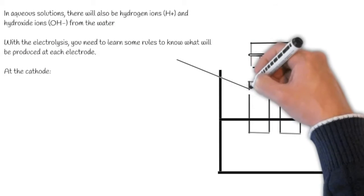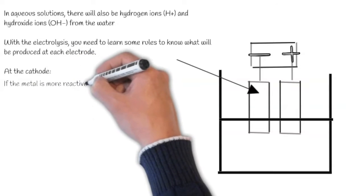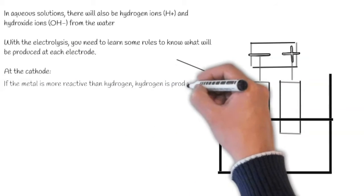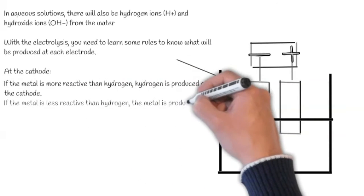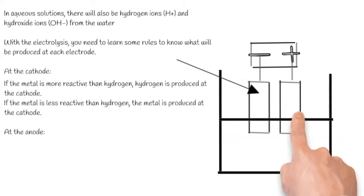At the cathode, which is here, if the metal is more reactive than hydrogen, hydrogen is produced at the cathode. If the metal is less reactive than hydrogen, the metal is produced at the cathode.